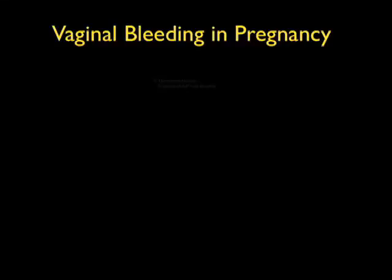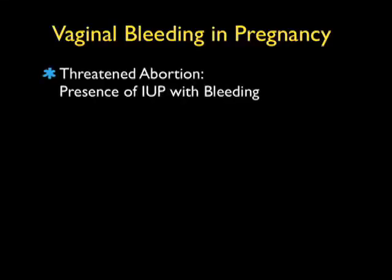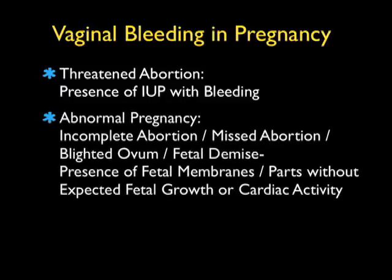When taking care of a patient who has vaginal bleeding in pregnancy, there are four main classifications of diagnoses. The first is a threatened abortion, defined as the presence of an intrauterine pregnancy with bleeding. The second main classification encompasses several terms: incomplete abortion, missed abortion, blighted ovum, and fetal demise.